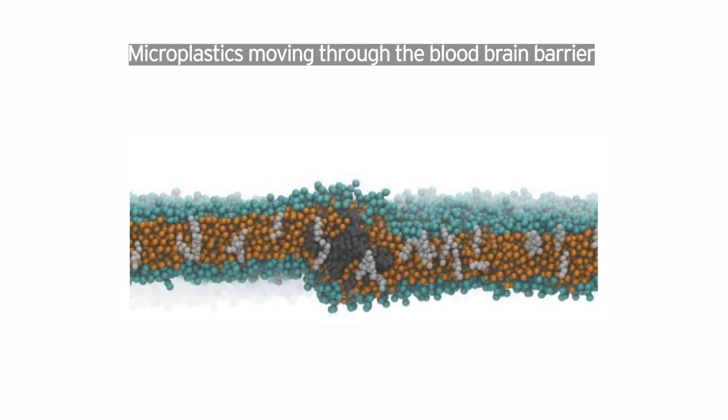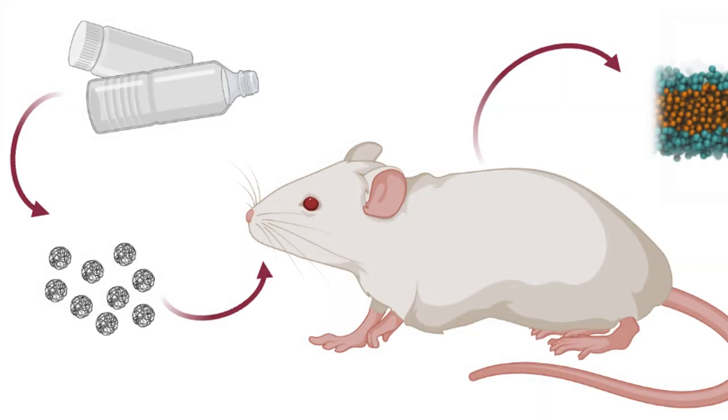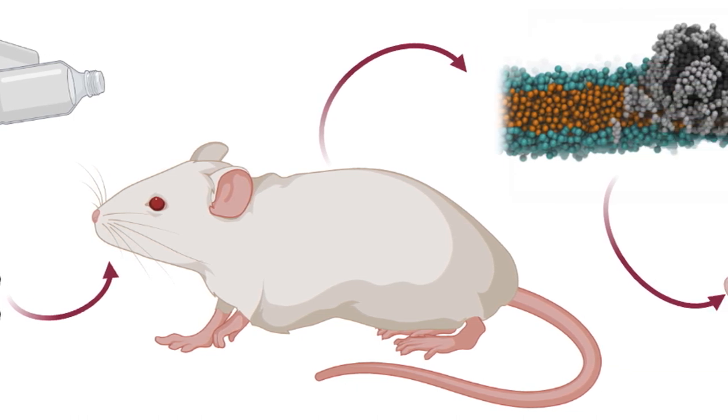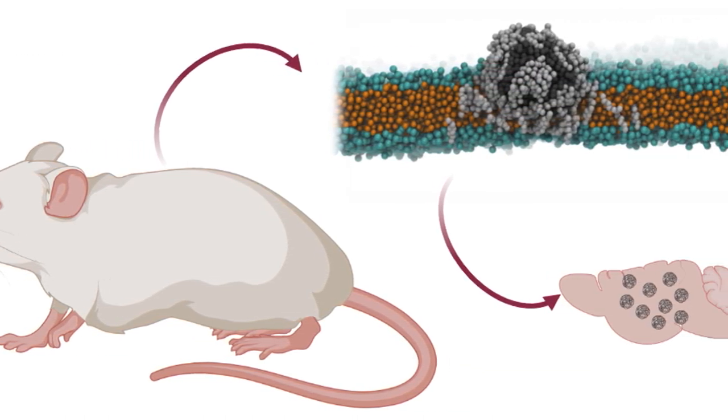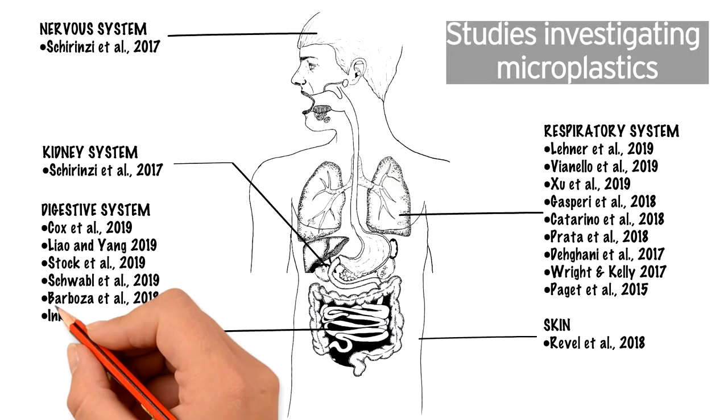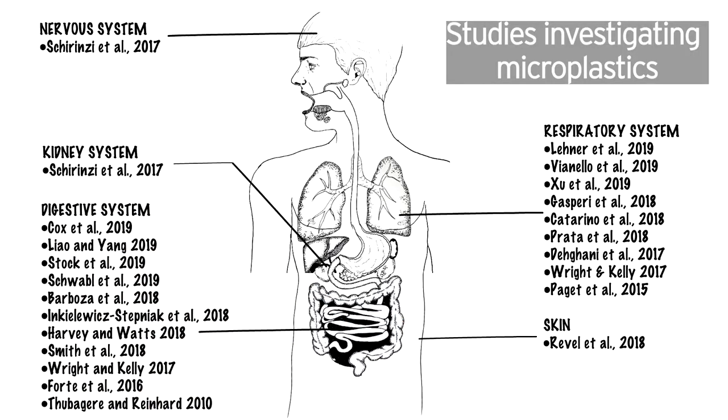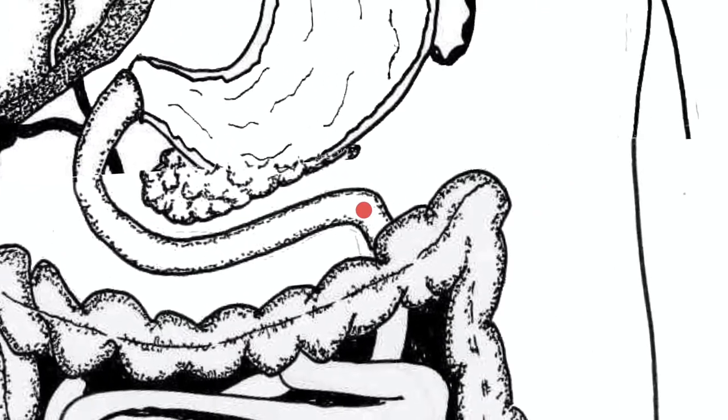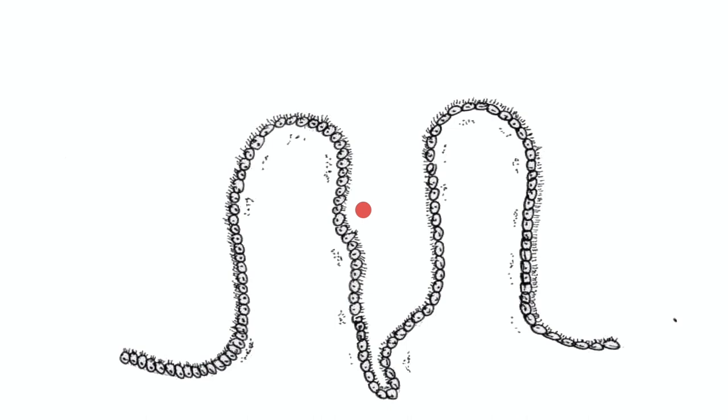Quite worryingly in tests that used mice, microplastics were found inside the brain just two hours after being ingested. This is not the first study to find microplastics inside sensitive areas of the body. Previous studies have shown that microplastics can have serious consequences when passing through other areas of the body such as the intestine.